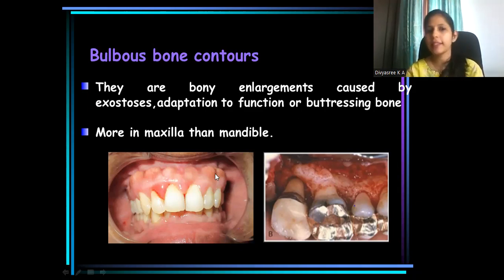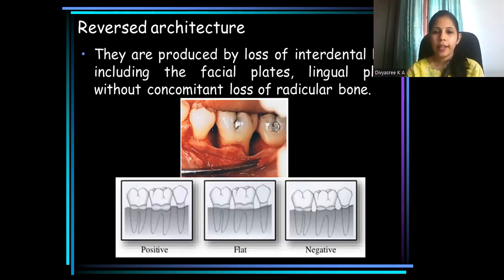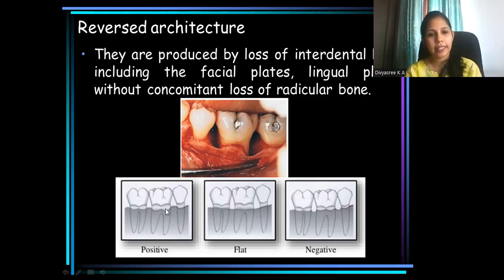It has been found to be more commonly seen in maxilla. Now coming to the bony architecture — reversed architecture. Ideal bony architecture, or positive architecture, is how it normally appears: the interdental bone is always at a higher level than the facial and lingual plates. In some cases due to bone loss they will be at the same level — that is known as flat bony architecture.